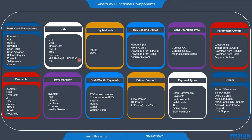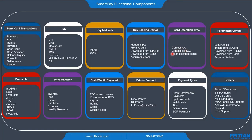We have the K-method module, which has master and slave K-method, and the DAC push method. We also have the key loading device module, which gives us the ability to do key loading using manual input or from EC card, or downloaded from the store, bank, or acquirer system. We have the card operation type module, which includes contact ICC, contactless, and magnetic stripe cards.